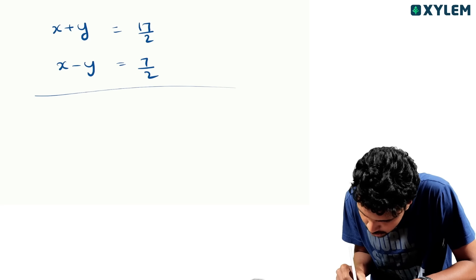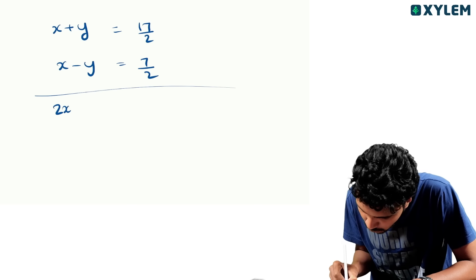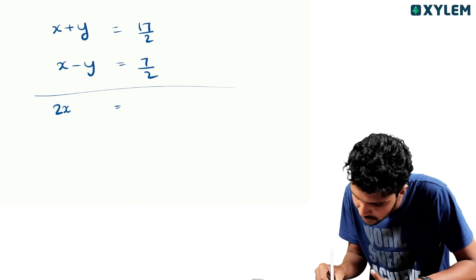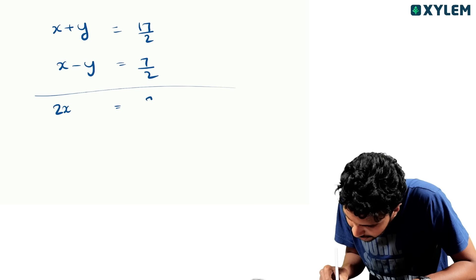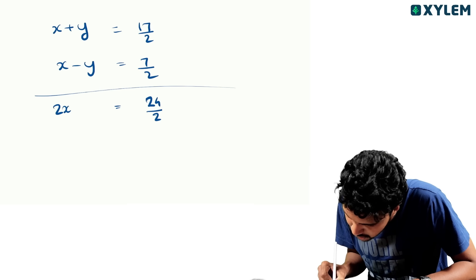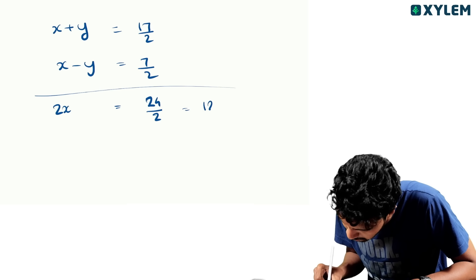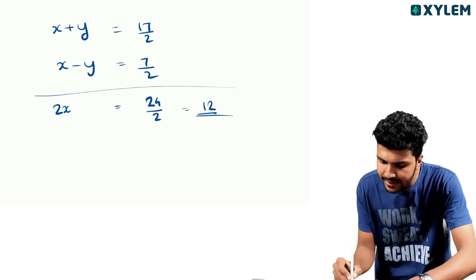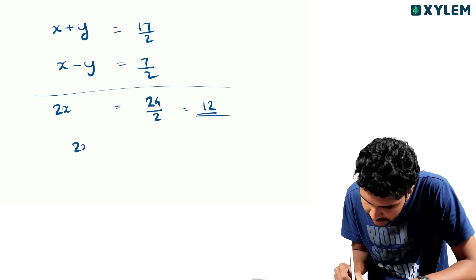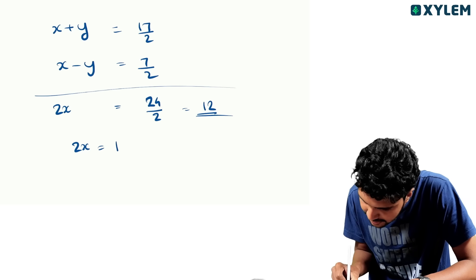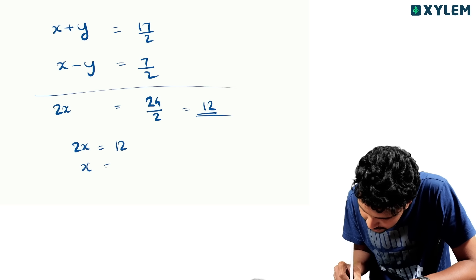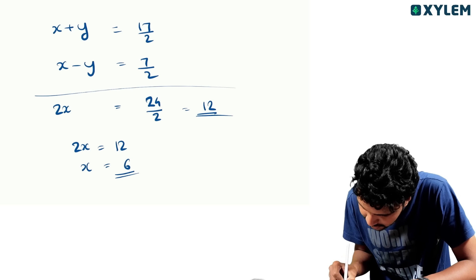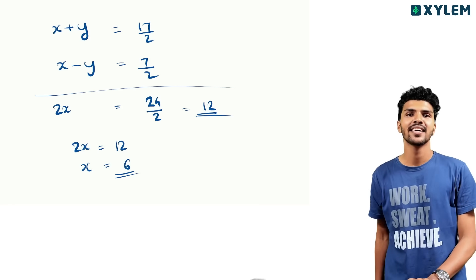2x is equal to 17 by 2, which equals 24 by 2, equal to 12. So 2x is 12, and x is 6.